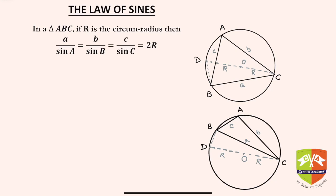You understand what circum radius means. If triangle ABC is inscribed in a circle, then R is the radius of that circle. Here we have taken two cases where in the first case ABC is an acute angled triangle, and in the second case ABC is an obtuse angled triangle.